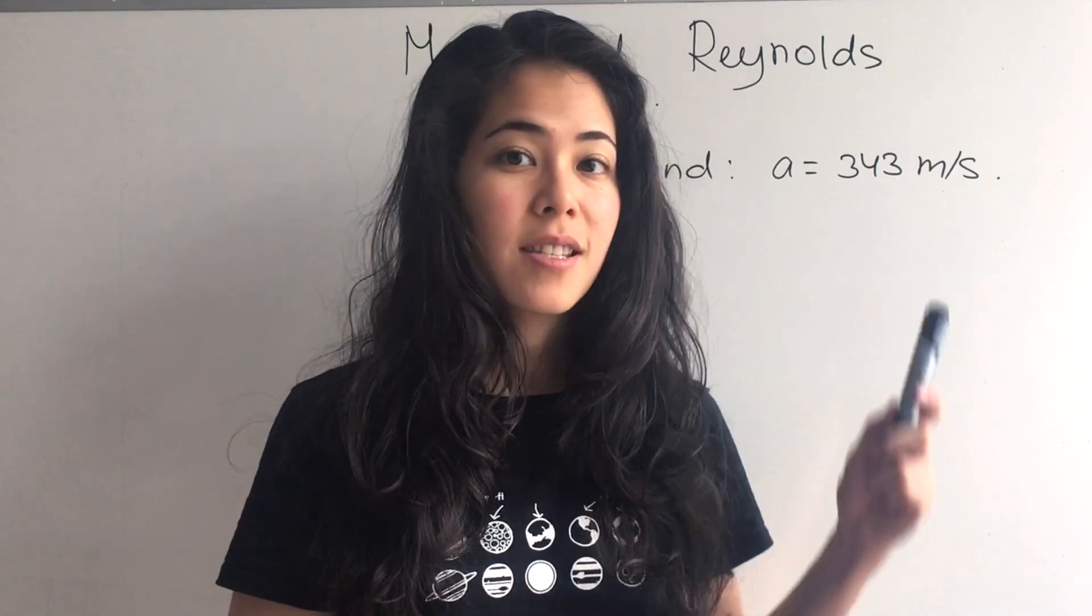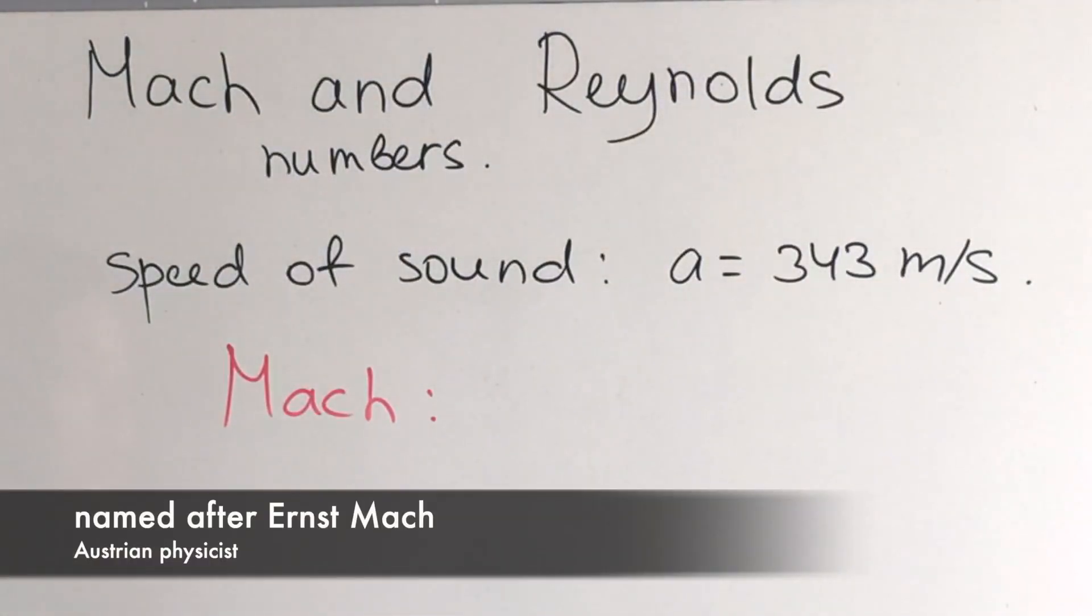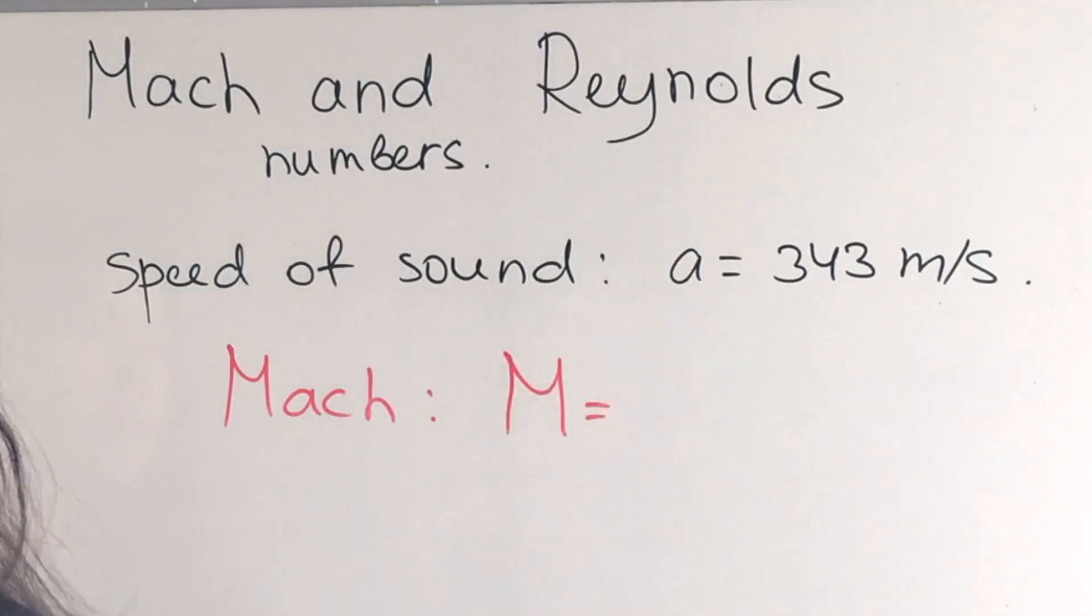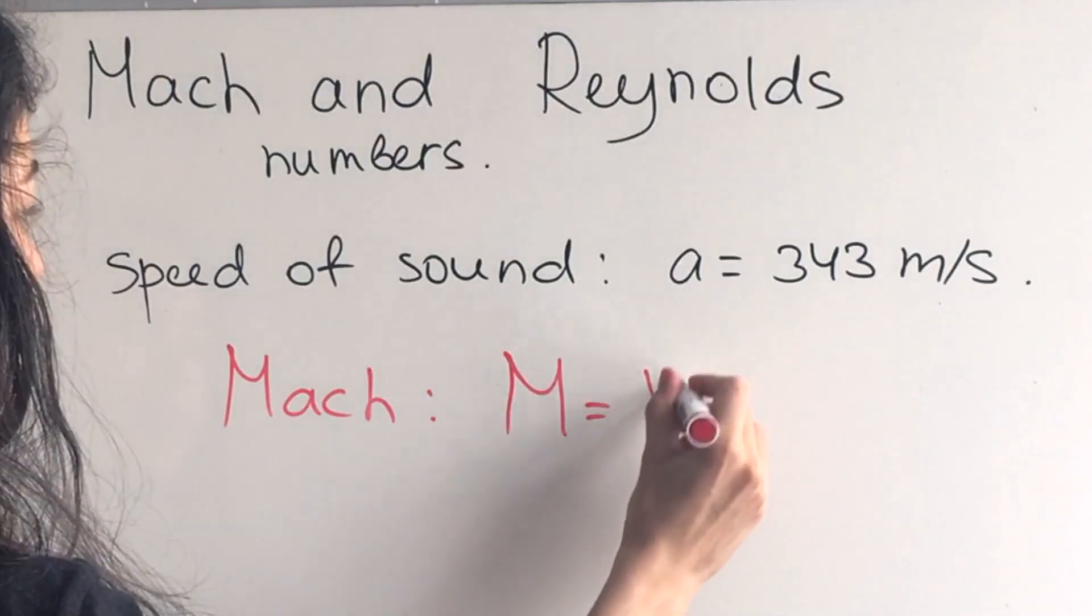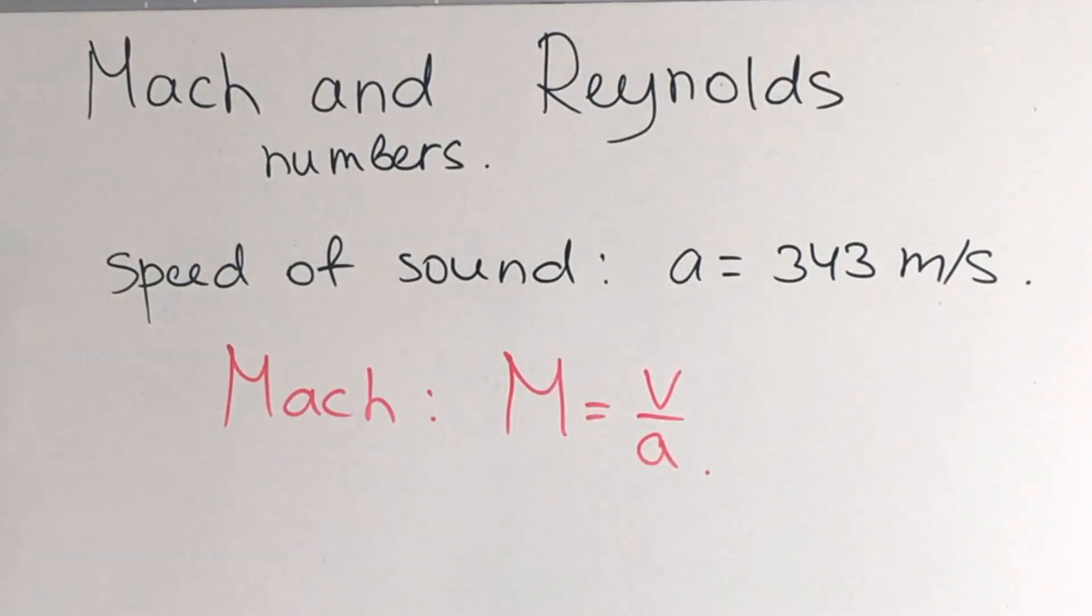The Mach number is just the ratio of the velocity of the airflow or the aircraft to the speed of sound. Mach number is named after Austrian physicist Ernst Mach and it's denoted by capital letter M. It's the ratio of the speed of the airflow to the speed of sound.